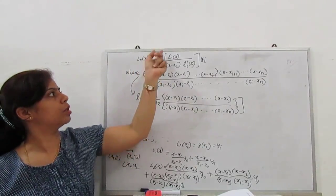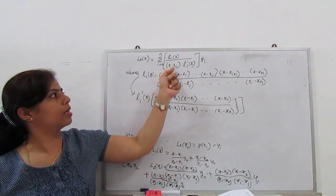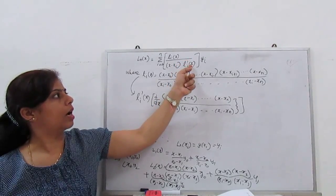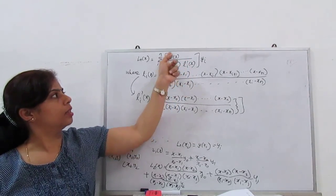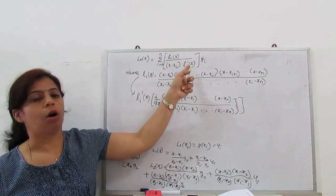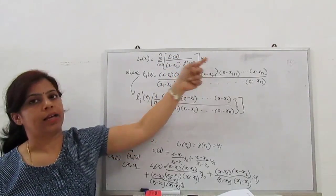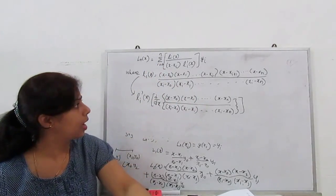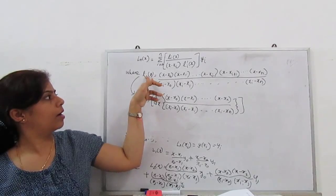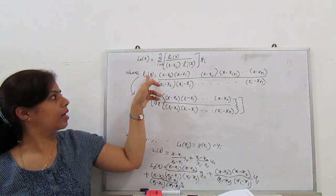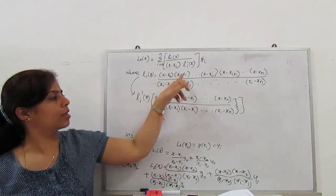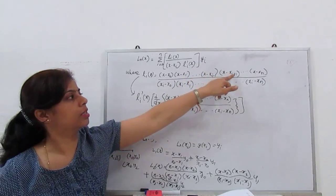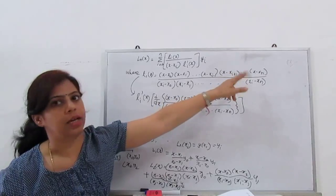What is our generalized formula? If we go for the general, we have summation i going from 0 to n of Li(x)/(x-xi) times L'i(x) times yi.